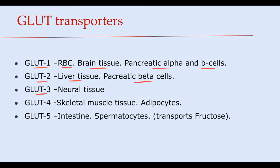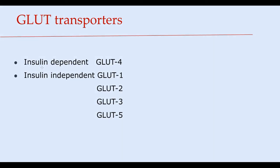GLUT 3 is present in neural tissue. GLUT 4 is present predominantly in skeletal muscle tissue and adipocytes. GLUT 5 is present in the intestine and spermatocytes. It is also important that GLUT 5 transports fructose. GLUT transporters are divided into two groups: insulin-dependent and insulin-independent.